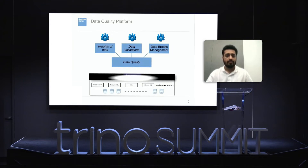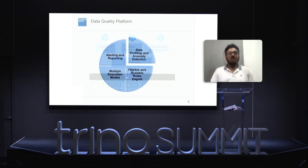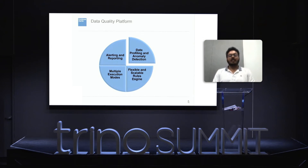In came Trino. Trino allowed us to segregate the access layer from our core application so that we can focus on solving data quality needs for our users, while Trino allows us to scalably query data from so many different sources in a unified manner.